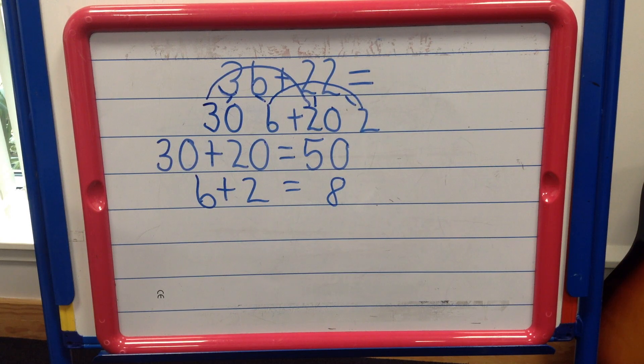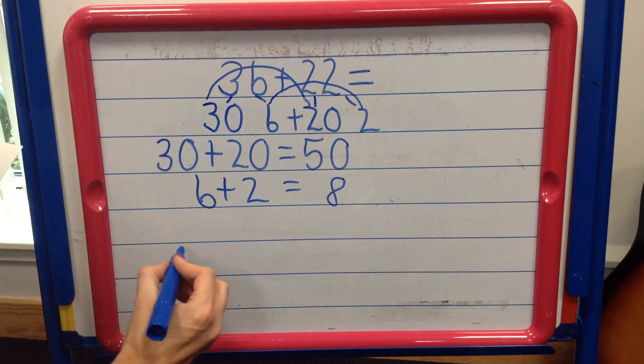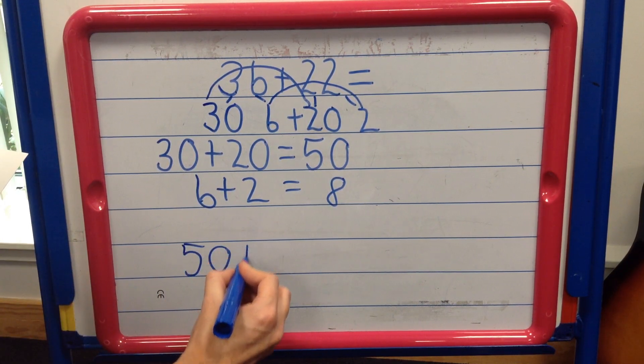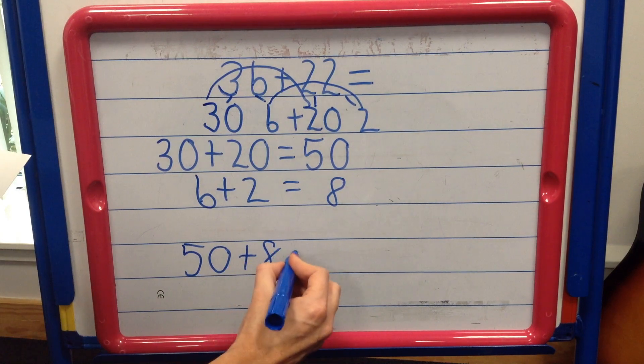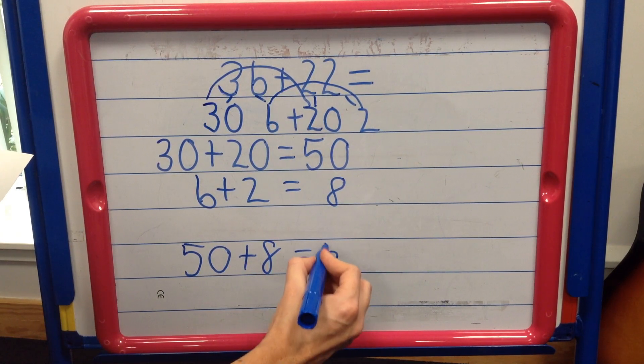Step 4. Finally, we add these totals together to give us our final total. 50, add on 8, gives us 58.